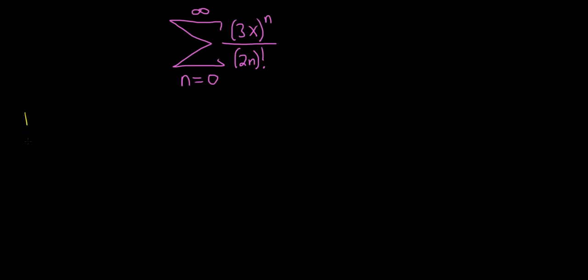The ratio test says that you take the limit as n goes to infinity of the absolute value of a sub n plus 1 over a sub n.